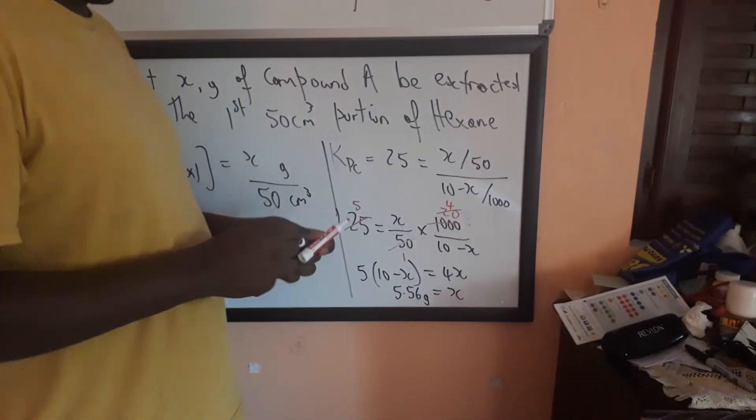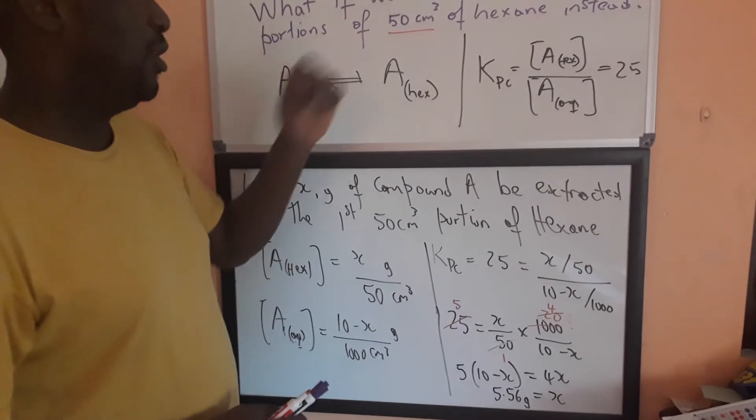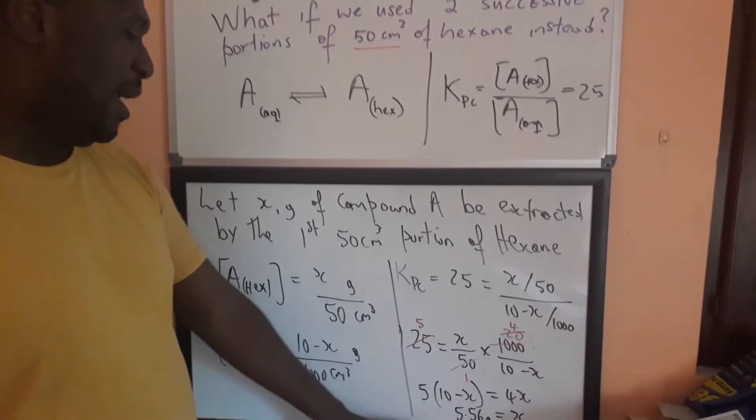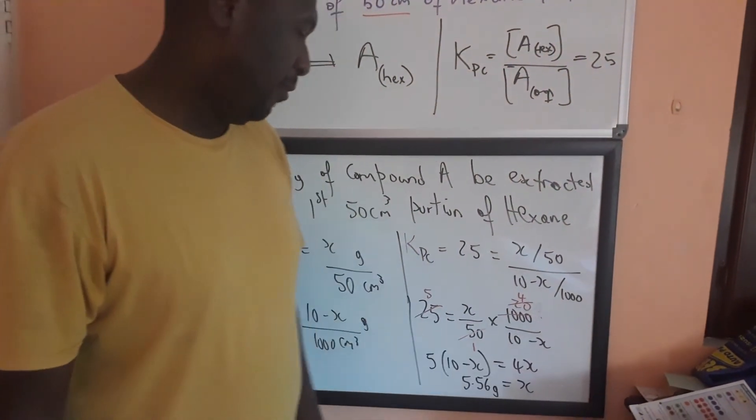So, therefore, after our first 50 ml, 50 centimeter cubed portion of hexane extraction, what we get, we extract out 5.56 grams.